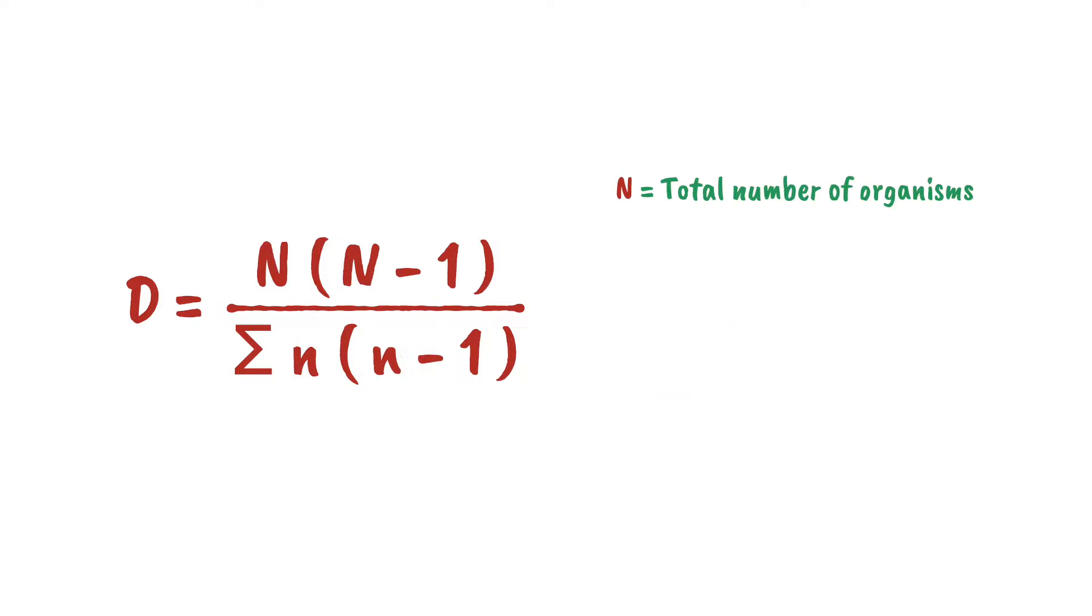Uppercase N is the total number of organisms. Lowercase n is the population of each individual species. And D is the diversity index, the number we're trying to find. The higher the value for D we get, the greater the biodiversity. I know this might look confusing, but it'll be clear when we work through it.